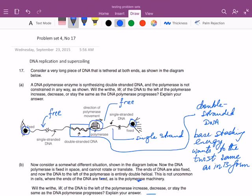But in this first part of the problem, because the polymerase is flexible and it can simply rotate around the DNA, as it adds new nucleotides to the growing double-strand, there is no torsional strain.